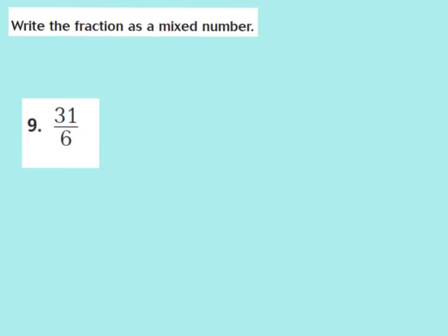We're going to continue our work on page 143. We're going to be working on number 9, and we're going to focus on writing our improper fraction, or fraction greater than 1, as a mixed number. We know that 31/6 is an improper fraction because the numerator is greater than the denominator — 31 is greater than 6. So the first thing we're going to do is change this to a sum of fractions.